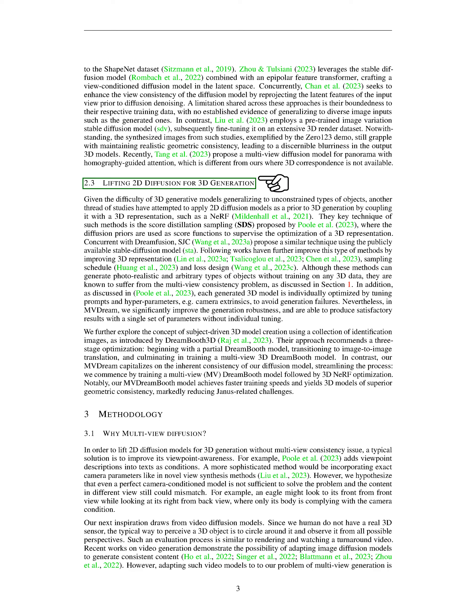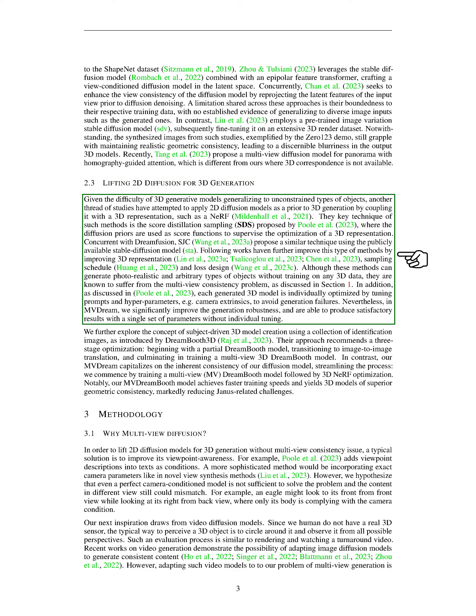Some researchers have tried to tackle this problem by using 2D diffusion models as a foundation for 3D generation, combining them with a 3D representation like a NeRF. A key technique in this approach is score distillation sampling (SDS), which uses diffusion priors as score functions to guide the optimization of a 3D representation. While these methods can create realistic and diverse objects without needing any 3D data, they often struggle with maintaining consistency across multiple views. Moreover, each 3D model generated requires individual optimization, including adjusting prompts and hyperparameters, to avoid generation failures.